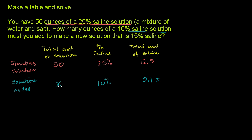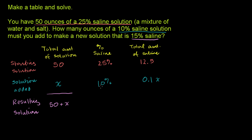That's what 10% of the solution being saline means. Now when we add it, what do we end up with? The resulting solution: if we started with 50 ounces and we add x ounces, we end up with 50 plus x ounces total volume. What percent saline is it? Our goal is to make a 15% saline solution, so it has to be 15% saline.